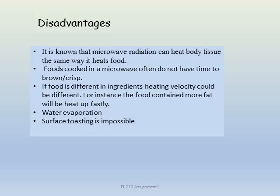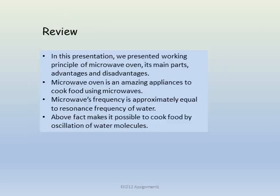Now the disadvantages. It is known that microwave radiation can heat body tissue the same way it heats food. Foods cooked in a microwave oven do not have time to brown or crisp. If food has different ingredients, heating velocity could be different — for example, food containing more fat will be heated up faster. Surface toasting is also impossible.